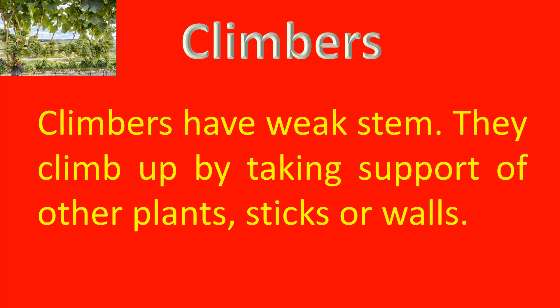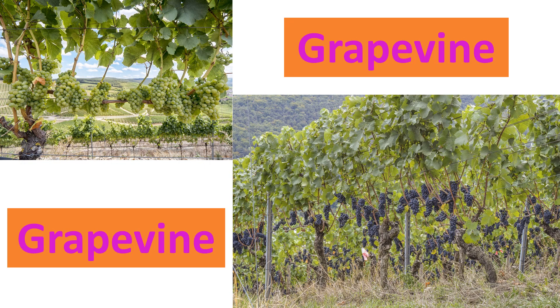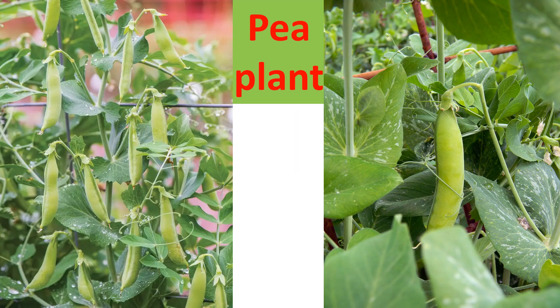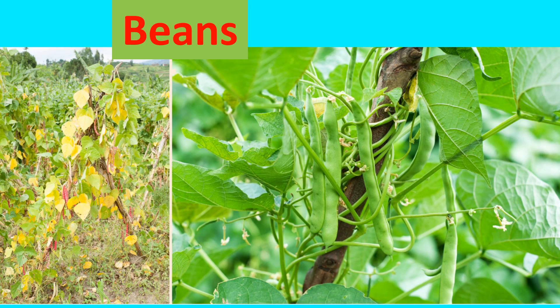Climbers have a weak stem. They climb up by taking support of other plants, sticks, or walls. Examples of climbers are Grapevine, Pea plant, and Beans.